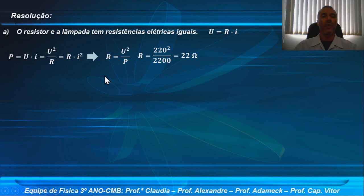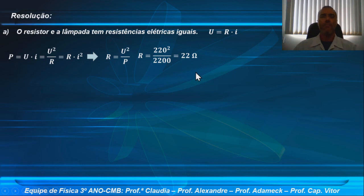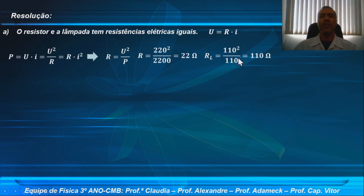Para encontrar a resistência, vou usar a relação R igual a U ao quadrado dividido por P. Para o resistor: 220 ao quadrado dividido por 2.200, resultando numa resistência de 22 ohms, a unidade de resistência no sistema internacional, ou seja, volts por ampere. Para a lâmpada: 110 ao quadrado dividido por 110 watts, resultando numa resistência de 110 ohms. Eles não possuem a mesma resistência elétrica; a resistência do resistor é bem menor.